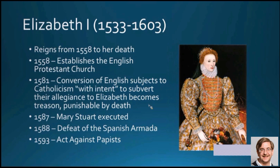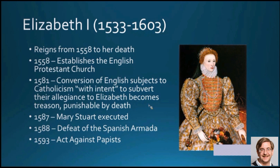Moving later in the 16th century, we come to Queen Elizabeth, who reigned for a very long time — a 45-year reign as Queen of England. When she took the throne in 1558, she established the English Protestant Church as an entity in its own right, retaining as monarch the supremacy over that church. In 1581, during Elizabeth's reign, the conversion of English subjects to Catholicism with intent to subvert their allegiance to Elizabeth became treason, punishable by death. Remember that date — 1581 — we'll come back to what caused that.